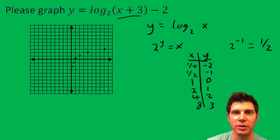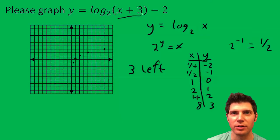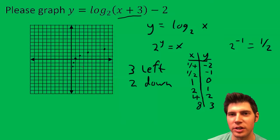This plus 3 right here means 3 to the left. And this negative 2 on the outside here means 2 down. So I'm just going to do that to each of these points.